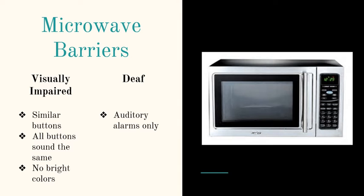Some barriers for someone who is deaf or hearing impaired. The main issue would be the alarm, because it is only auditory in most circumstances, so it's hard for them to know when the microwave has finished.